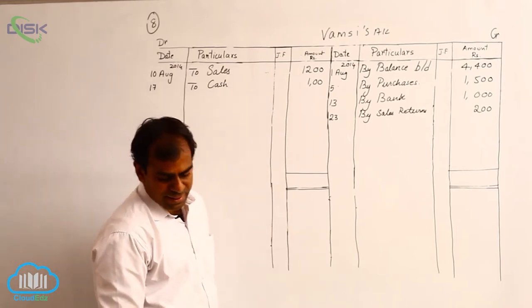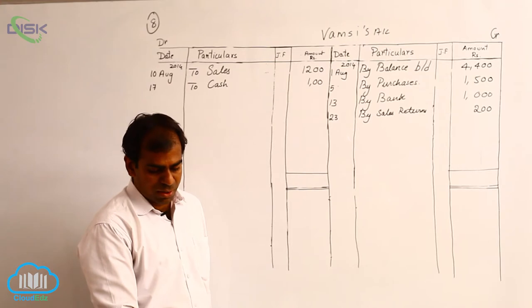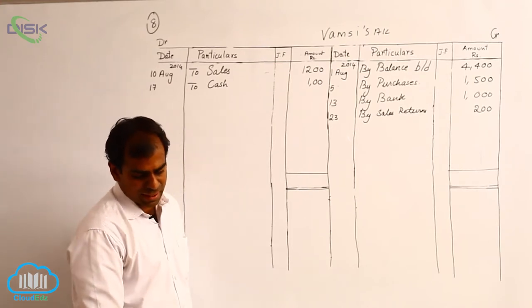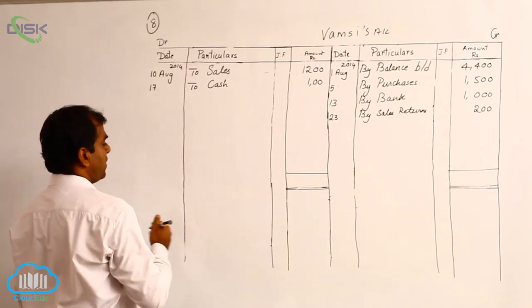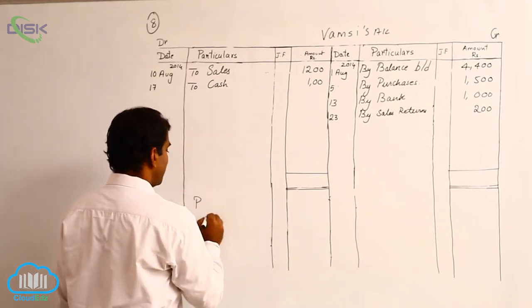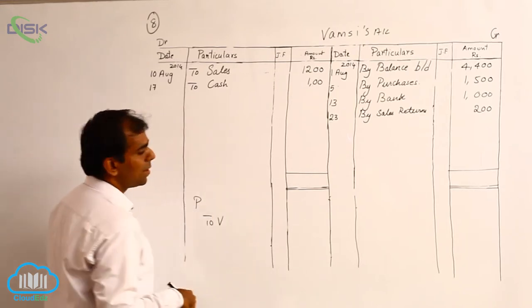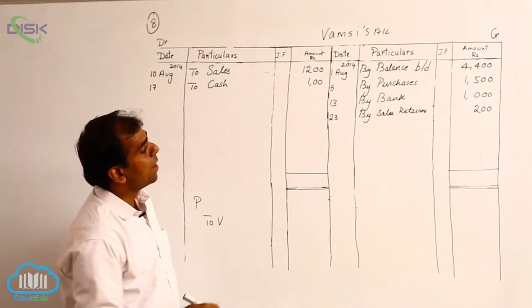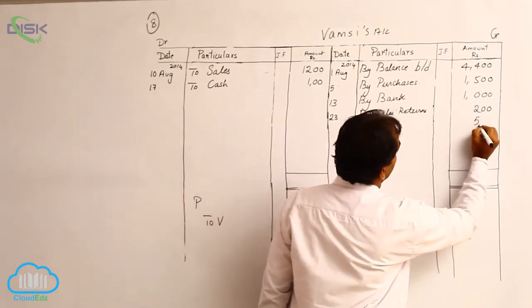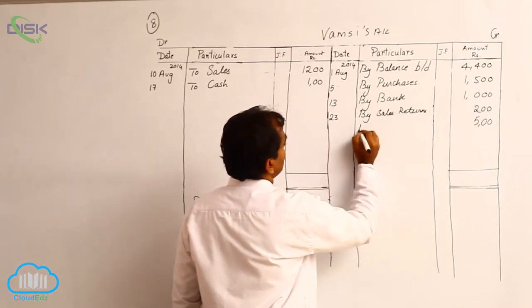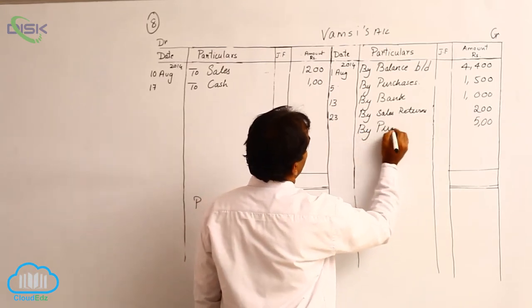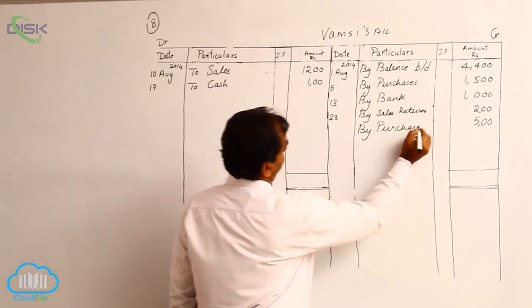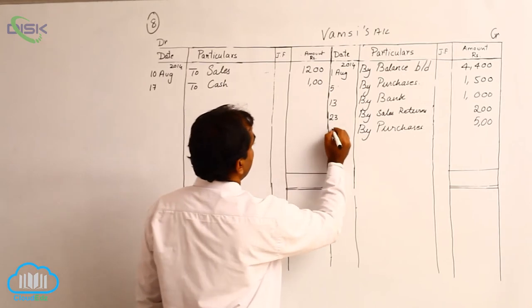On 29th, purchased goods from Vamsi for 500. The journal entry would be purchases account debit to Vamsi's account. So we have to credit Vamsi's account. On the credit side, we write 500, with the reason being purchases. The date is 29th.